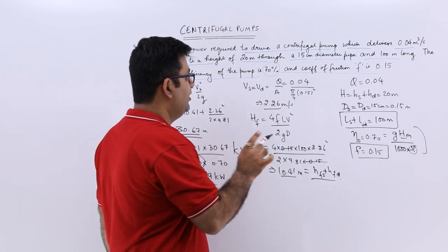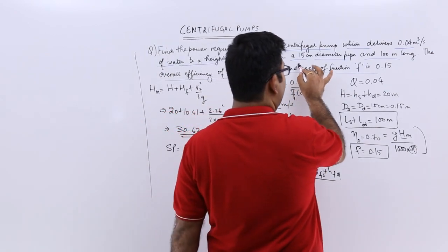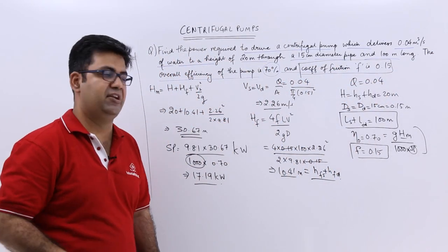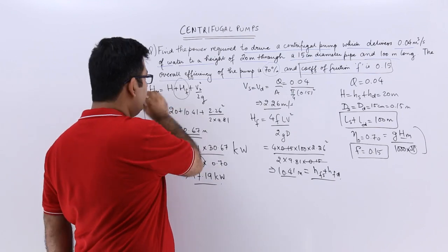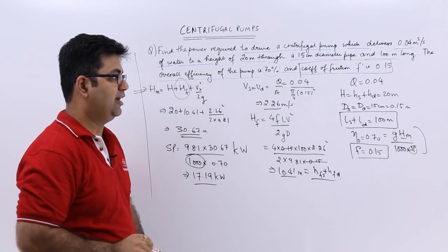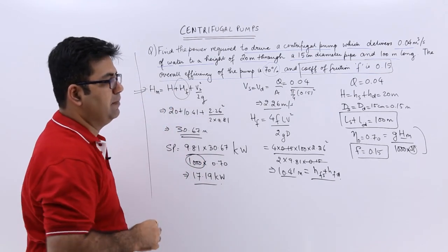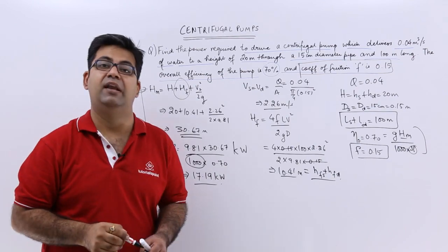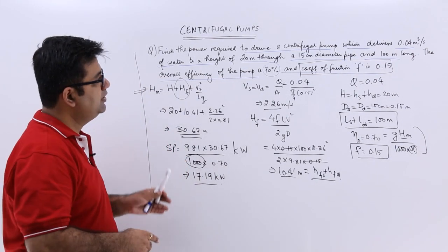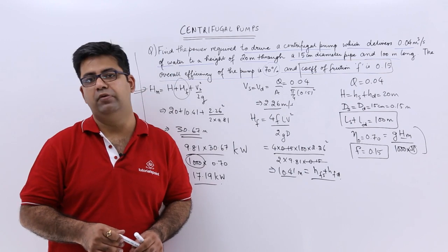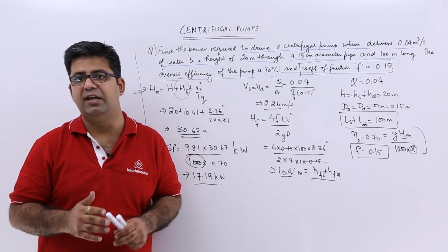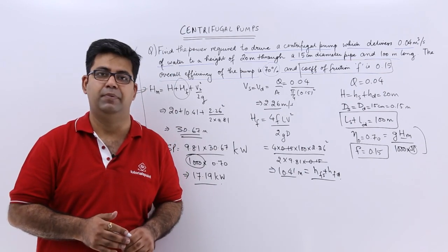So this is how we solve this question when the coefficient of friction is given — it means there is a friction head loss which must be added to the total manometric head against which the pump has to deliver work. I hope you have understood this question. Now let's move on to the next video and talk about the minimum speed for starting a centrifugal pump.